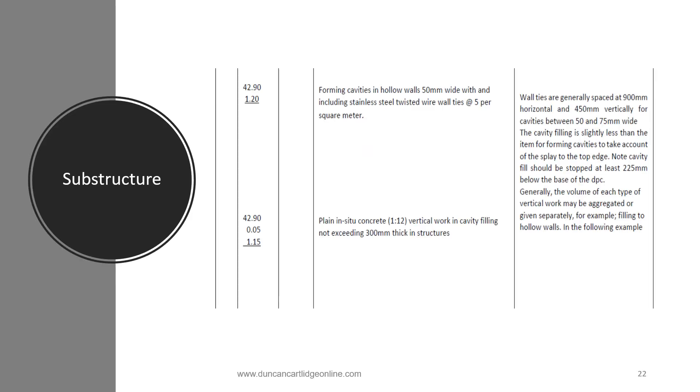This page contains yet another two items that can utilize the mean girth. Forming a cavity and building in wall ties is a measurable item as is the concrete cavity filling discussed earlier. Even though the concrete filling is only 50 millimeters thick, it has to be measured in cubic meters.